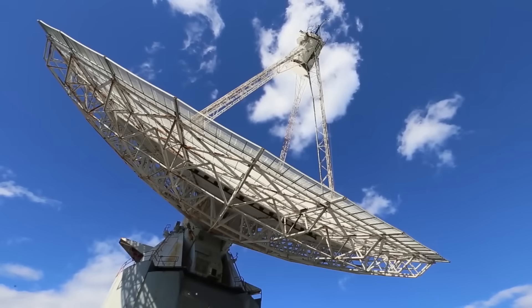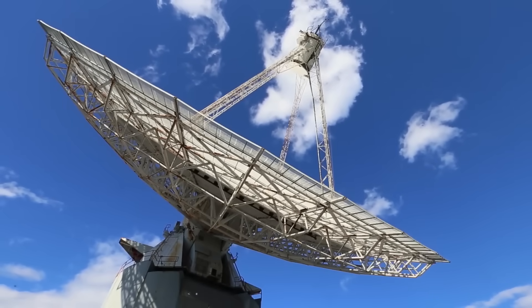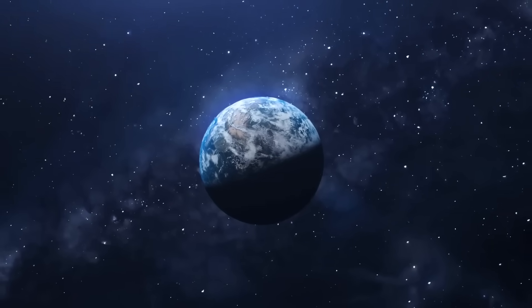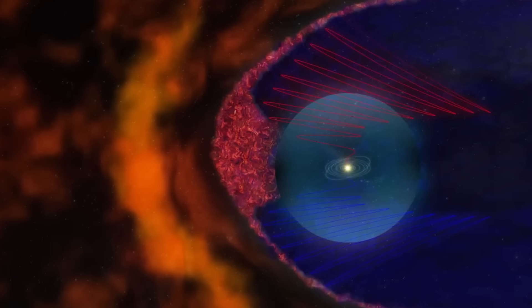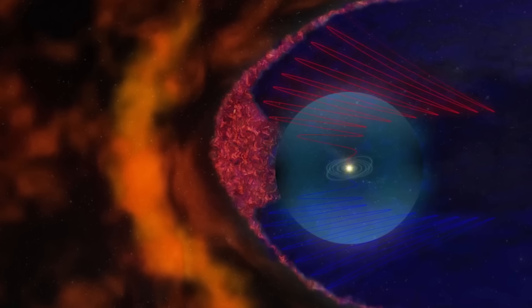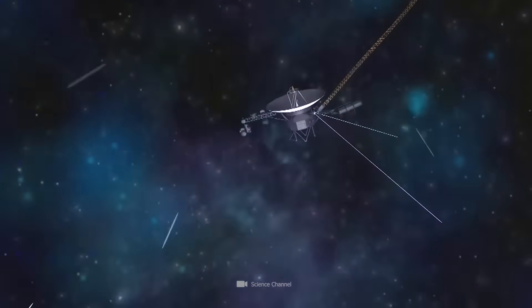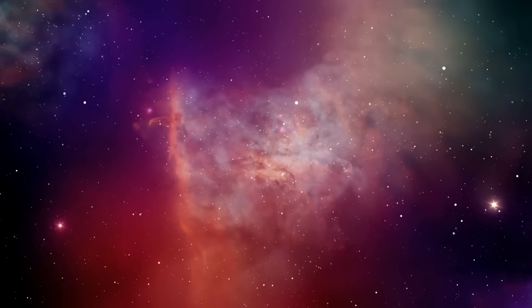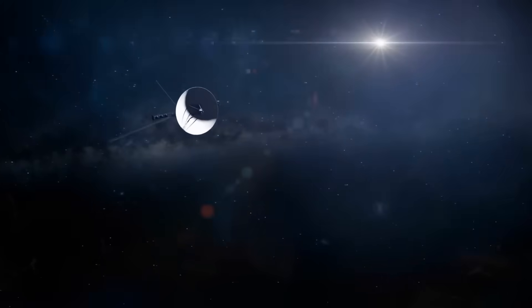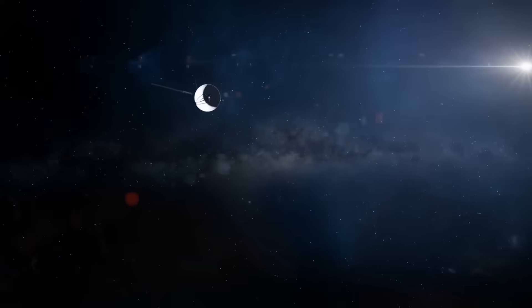The Voyager mission team also closely monitored any changes in the prevailing magnetic field as the spacecraft moved in the interstellar medium, an environment composed of ionized gases and influenced by nearby stars. The interstellar magnetic field was expected to be oriented differently compared to that of the heliosphere.